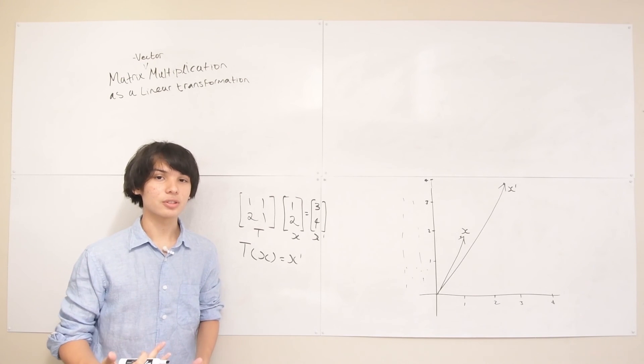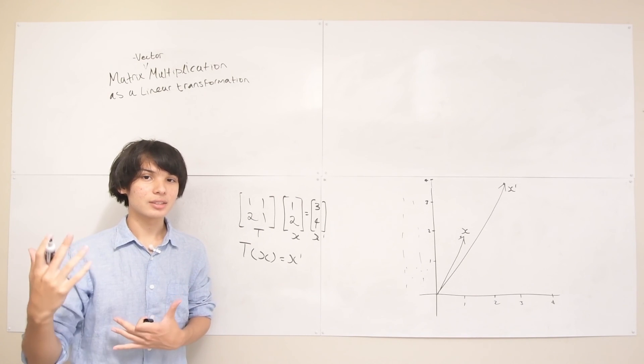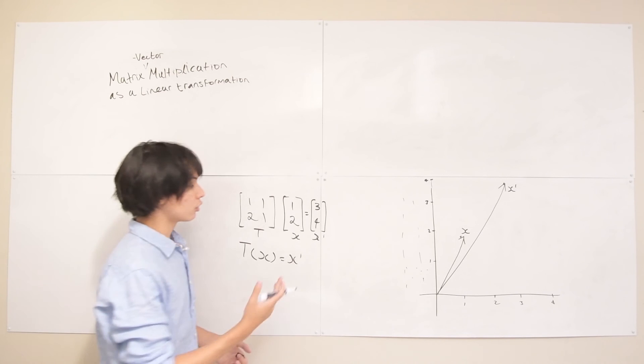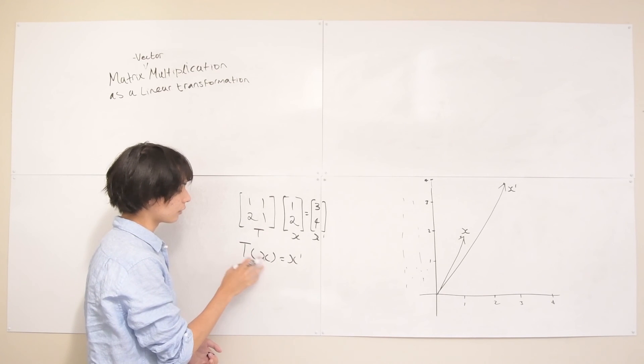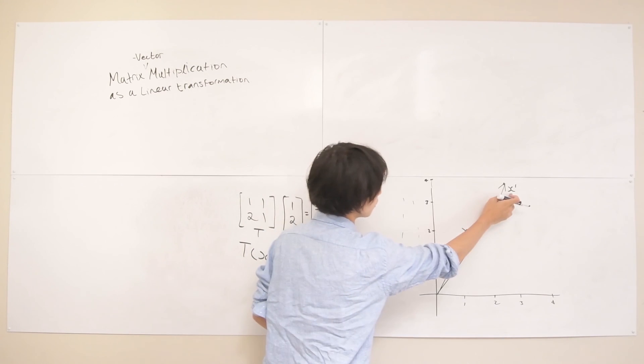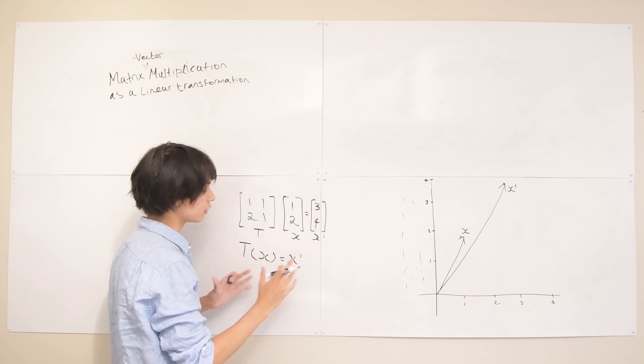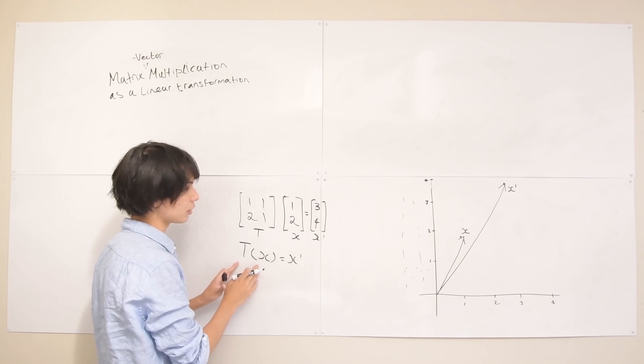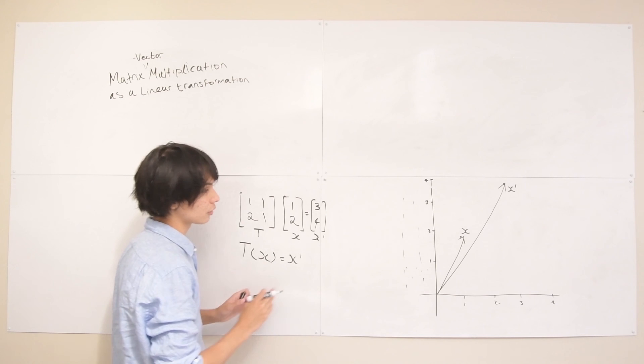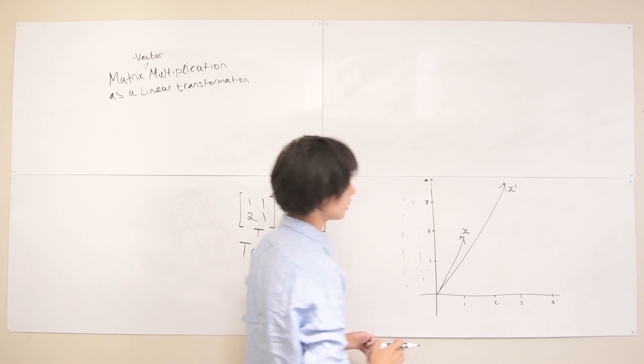That's kind of why we call it a transformation—to elicit this mental image that you're not just putting in some single vector and getting some vector that replaces it here, but you're thinking of every single point undergoing this transformation when multiplying by this matrix and moving to some other point in the Cartesian space.